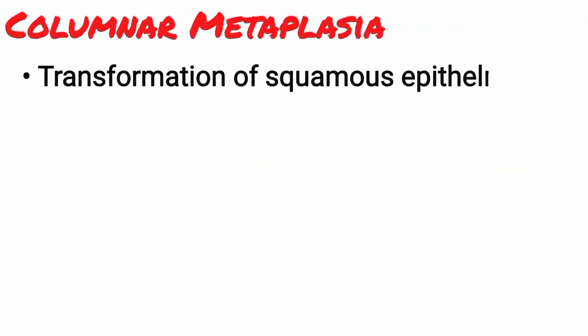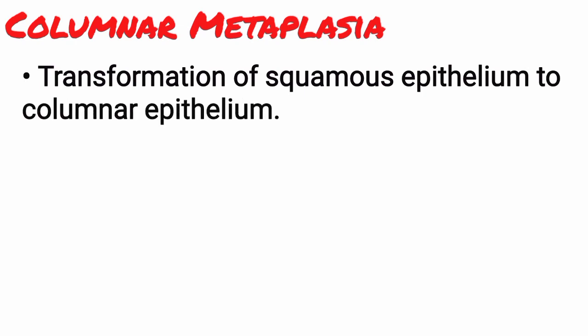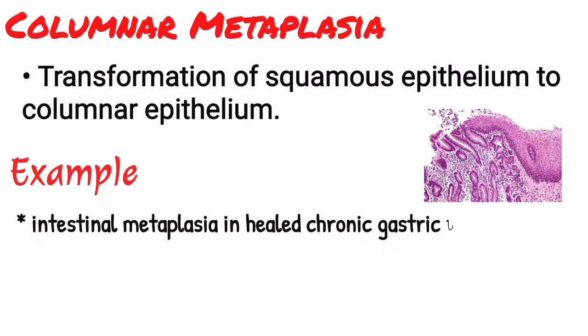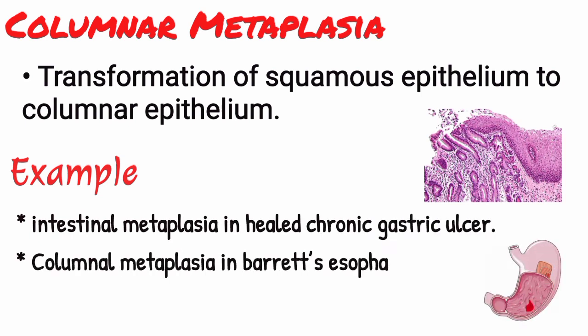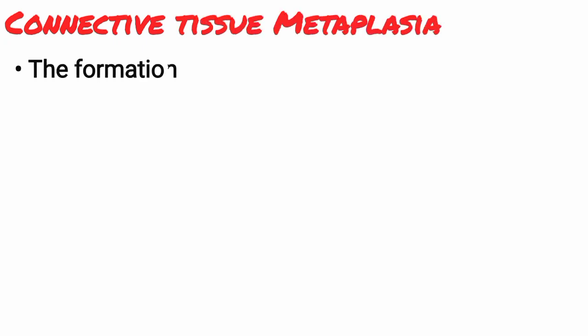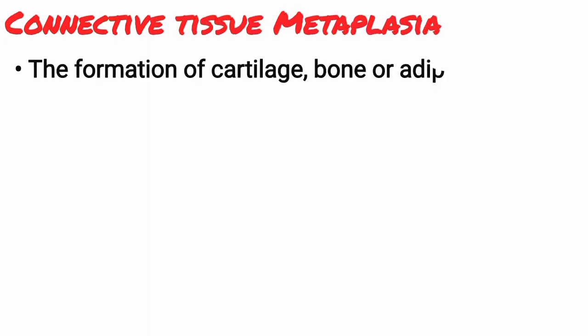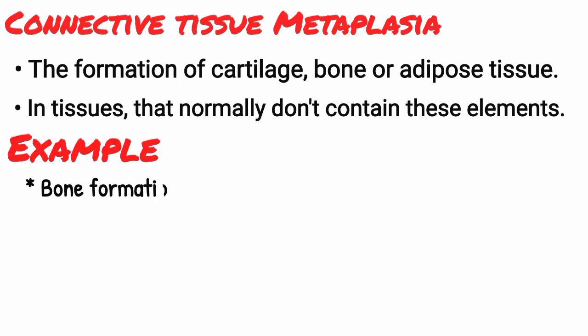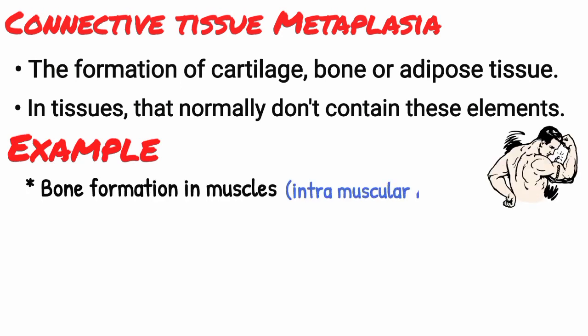Columnar metaplasia: there are some conditions in which there is transformation of squamous epithelium to columnar epithelium — for example, intestinal metaplasia in healed chronic gastric ulcer. Connective tissue metaplasia is the formation of cartilage, bone, or adipose tissue in tissues that normally do not contain these elements — for example, bone formation in muscles, which occasionally occurs after intramuscular hemorrhage.